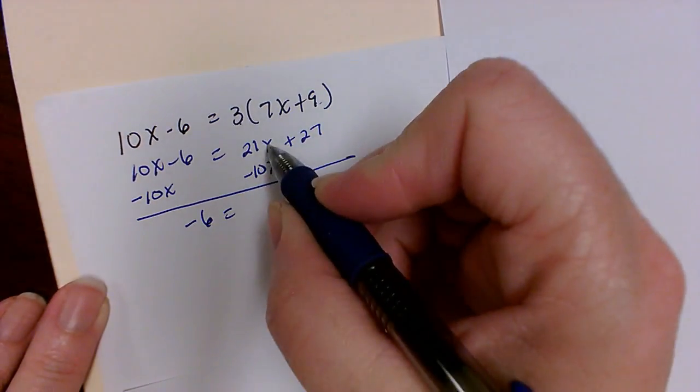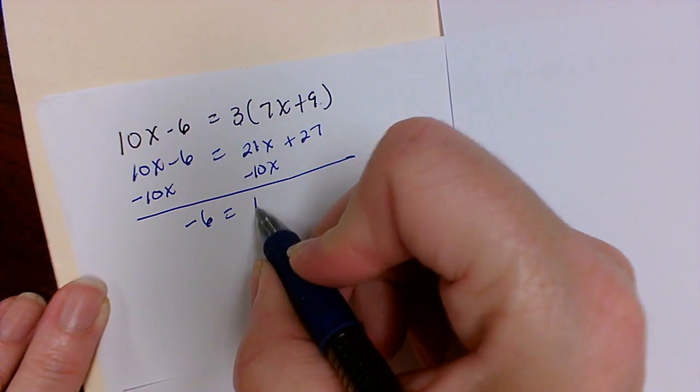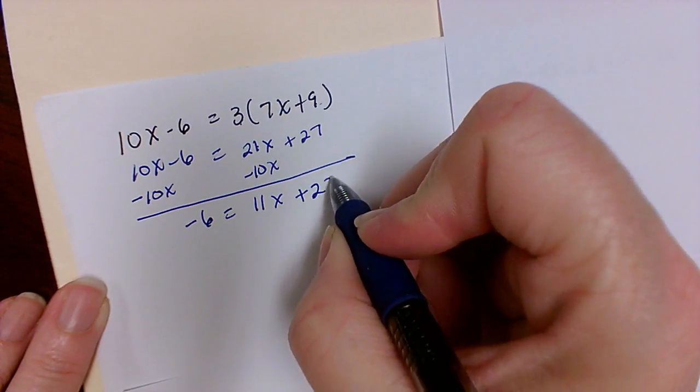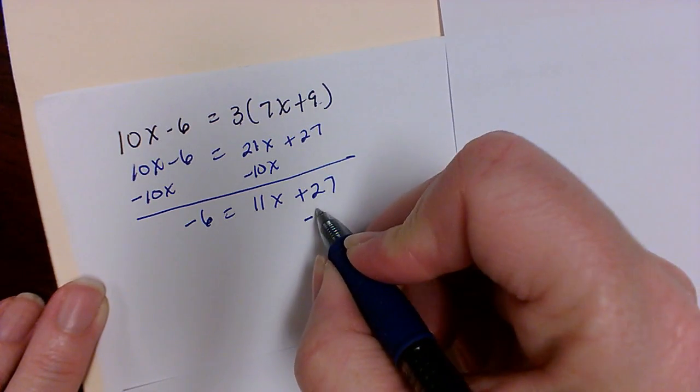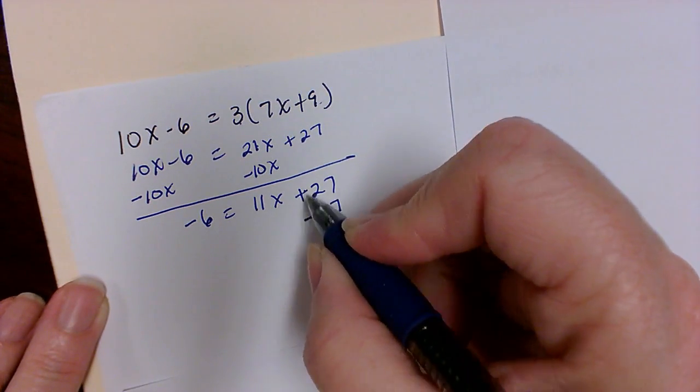This will leave me with negative 6 over here. 21 minus 10 is 11x plus 27. Now I need to move this number to the other side. So I'm also going to subtract it because that's opposite of addition.